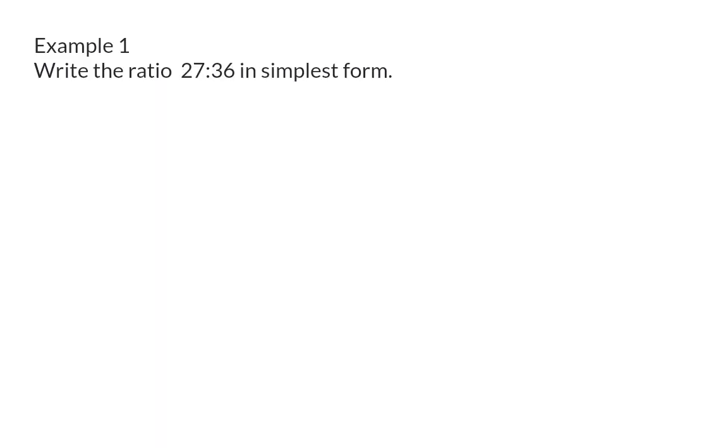It is useful to always write a ratio in its simplest form, because the smaller the values are, the easier your calculations will be. Here, we can now decide to keep the ratio written in ratio form as 27 to 36, or you can decide to rewrite it in fraction form.